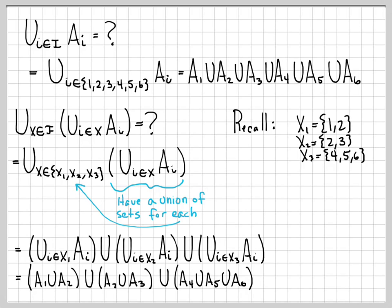So this is just a very specific example to get a better feel for what families of sets look like, what indexed families of sets look like, and what some of these more complicated sets — the union over little i in capital I of Ai, and also this union-of-a-union set — look like for a very specific example.